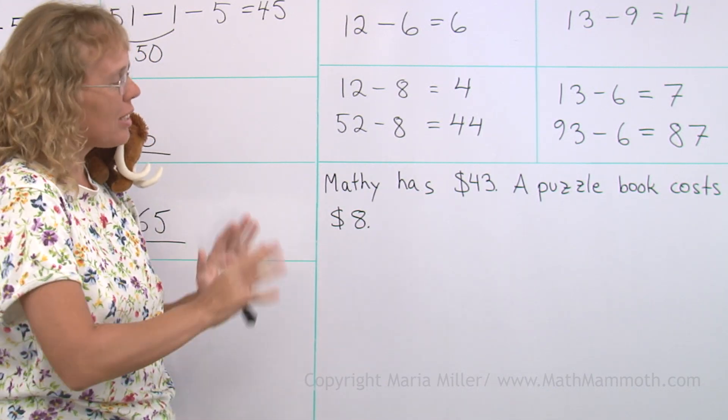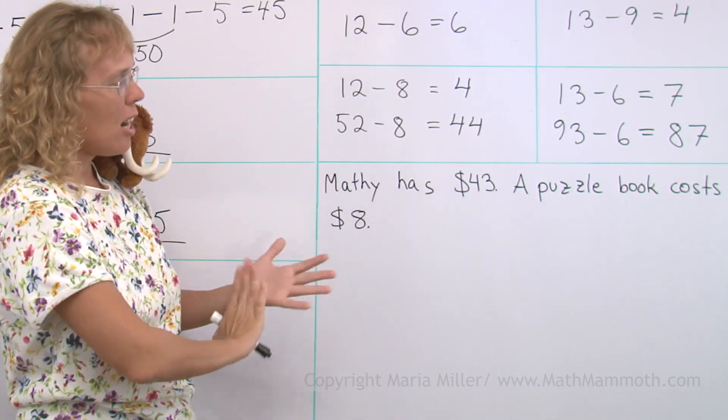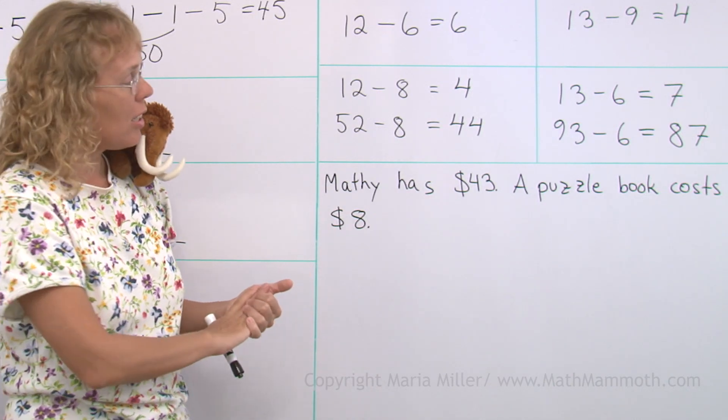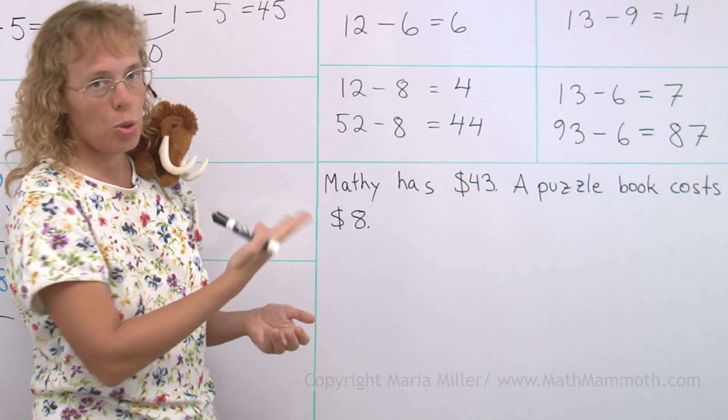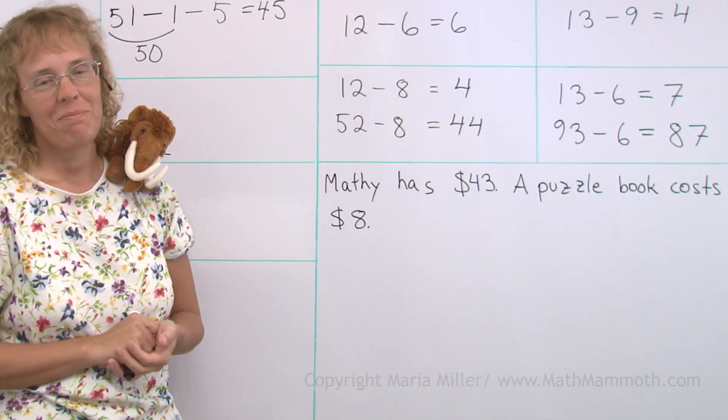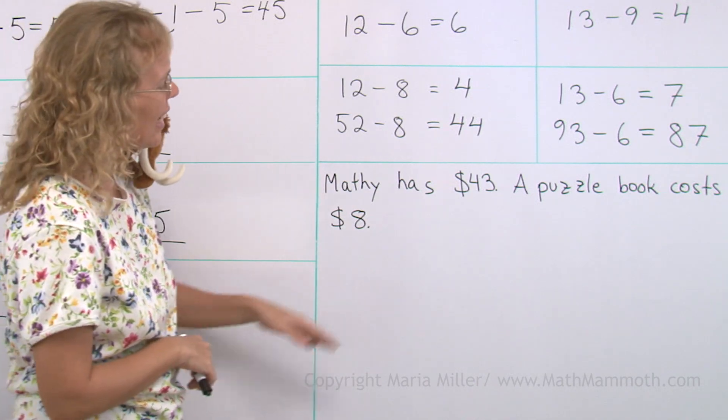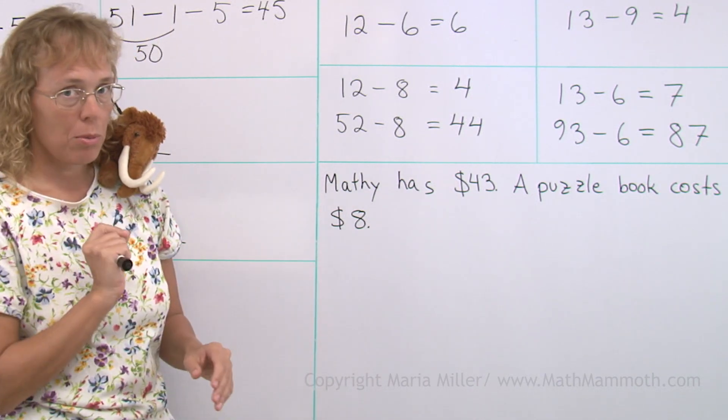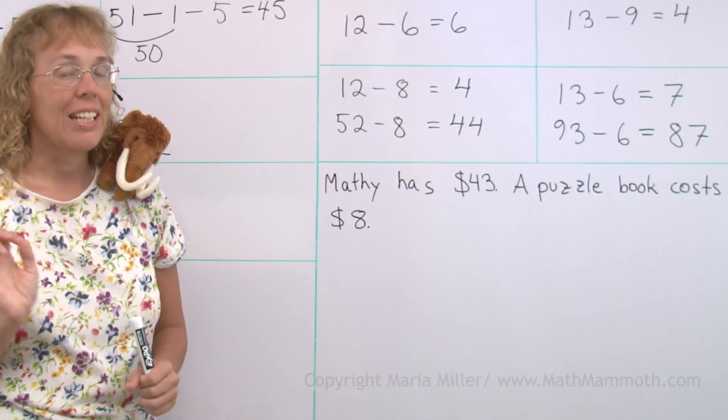And one more question. How about if we just ask, how much would three puzzle books cost? Or we could say that Mathie buys two puzzle books, and then how much money will he have left? Those types of things. Just for this, I want to solve that if Mathie buys one puzzle book, then how much money will he have left?